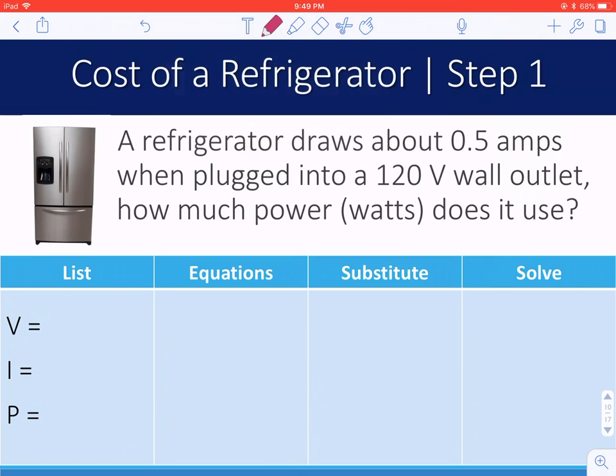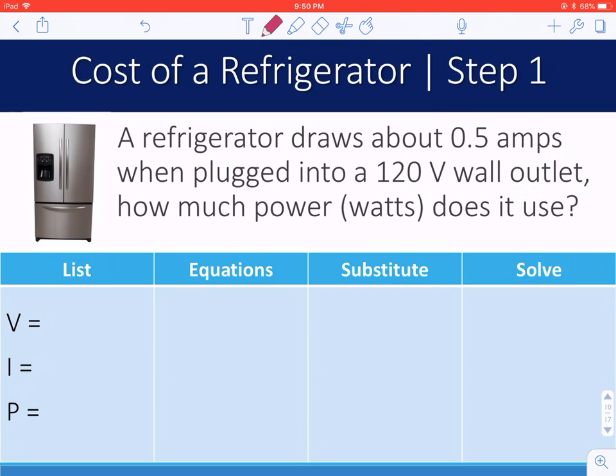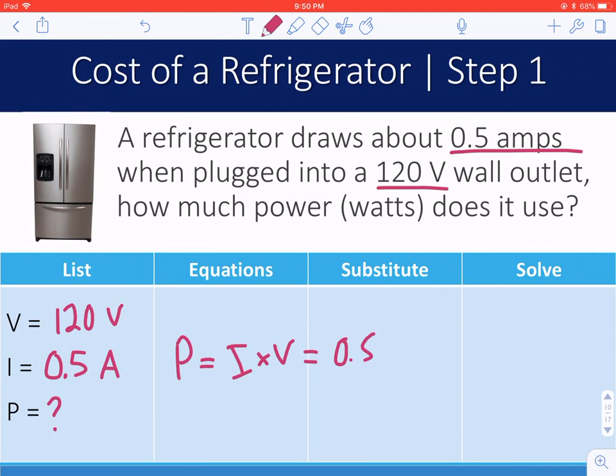So ultimately, what I want you to be able to do with this is to calculate the cost of running a particular appliance. And we're going to go through this example with the cost of a refrigerator. So let's say a refrigerator draws half an amp of power when plugged into 120 volts. Current, in this case, 0.5 amps is our current, that's I, and V is 120 volts. That means we are looking for power. Power being I times V is 0.5 times 120, or 60 watts of power.